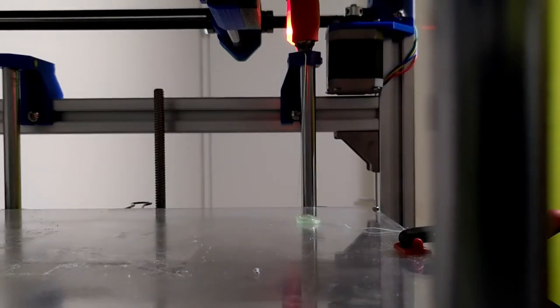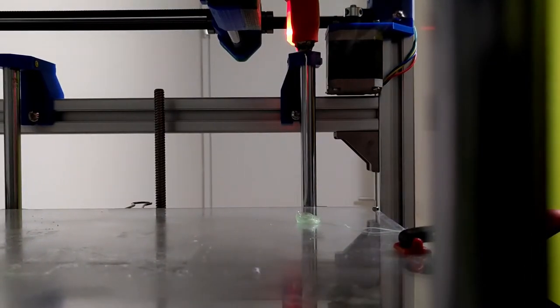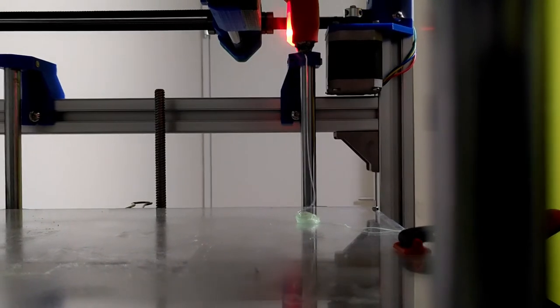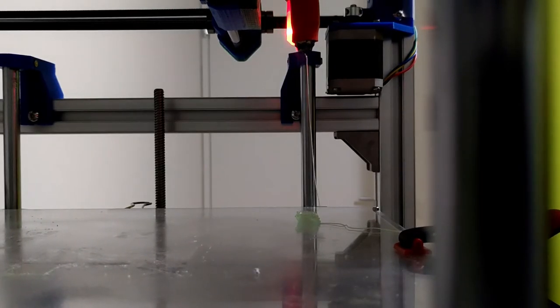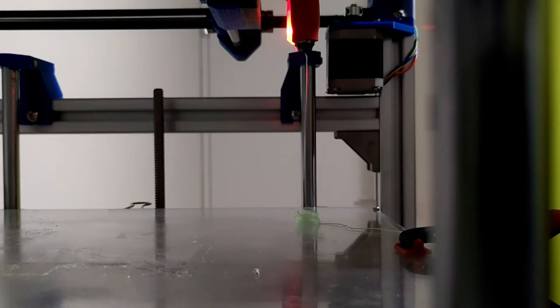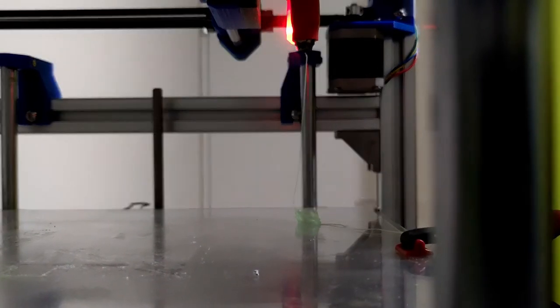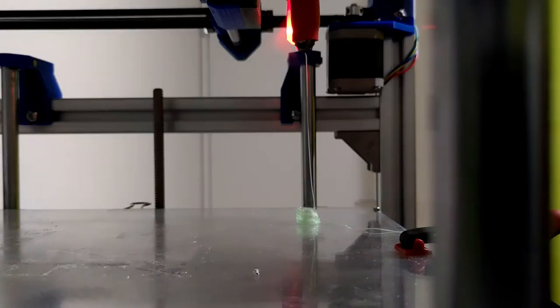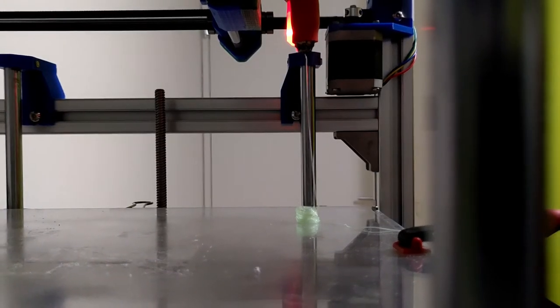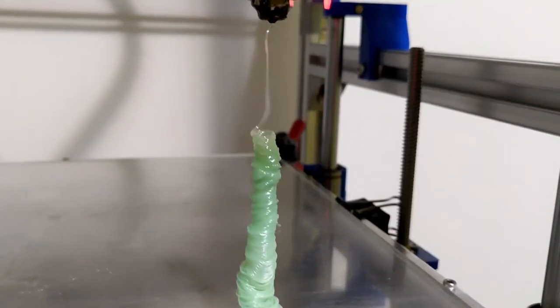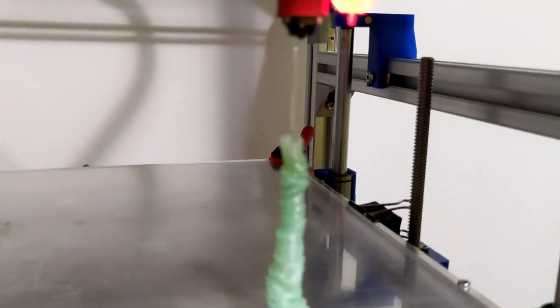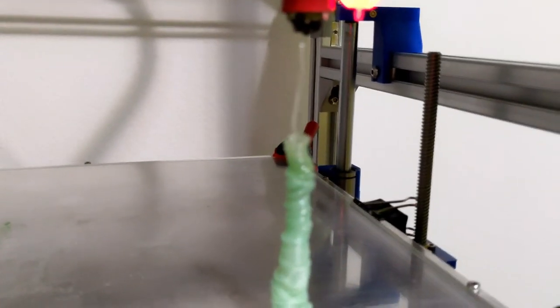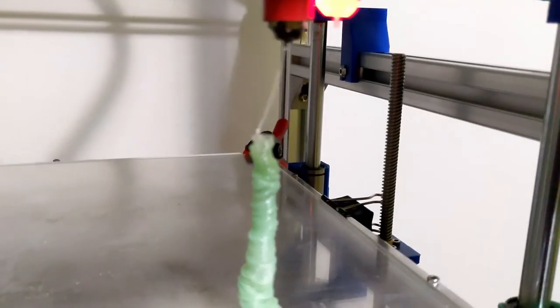Now the printer is extruding at 10 cubic millimeters per second. The nozzle must have cleaned itself up a little bit because the curling decreased. The hot filament is collapsing under its own weight now. The deposition rate is higher than the cooling.